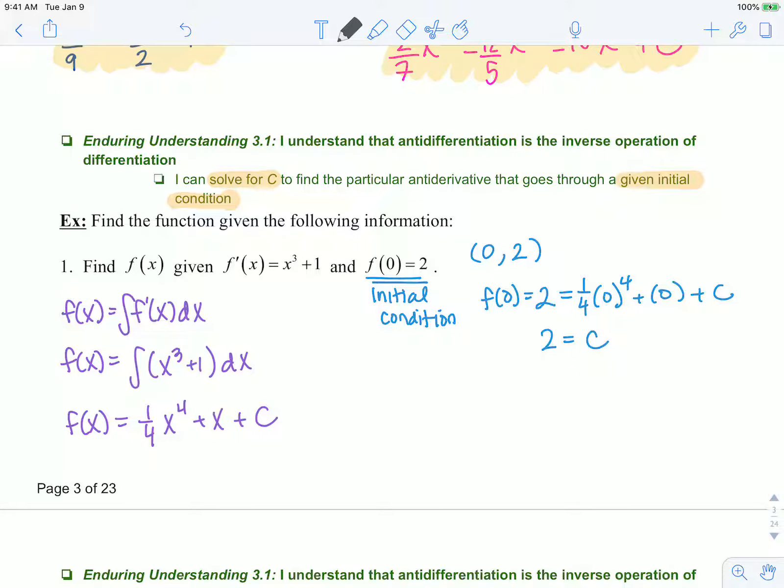So our final answer is f of x equals 1 fourth x to the fourth plus x plus 2. Our initial antiderivative with C solved for.